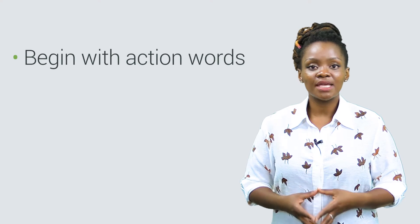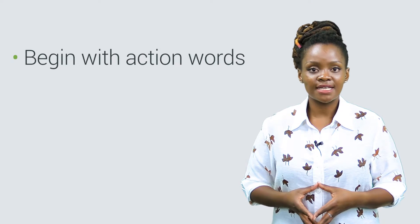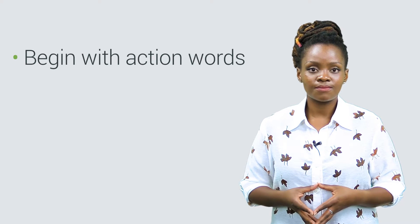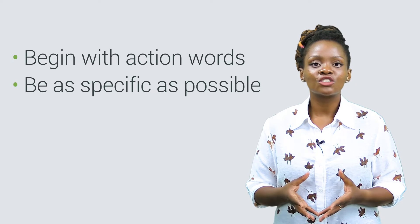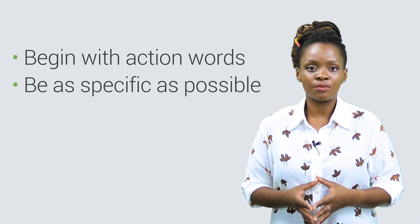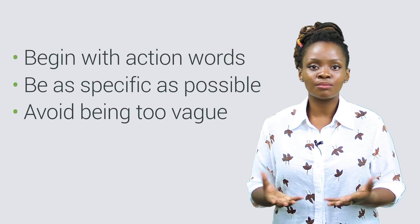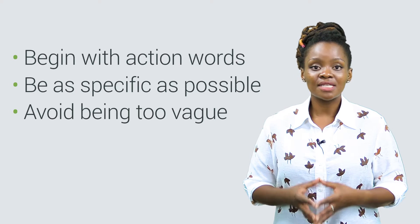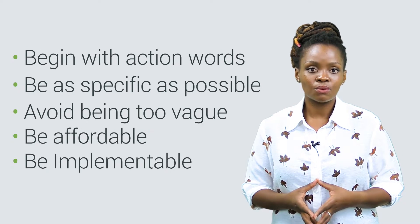When defining sub-projects, consider the following: firstly, begin with an action word such as draft, implement, facilitate, or commission research; secondly, be as specific as possible — for example, 'draft an alien invasive eradication plan for a particular community'; thirdly, avoid being too vague, for example saying 'improve infrastructure.' Sub-projects must be affordable and implementable with current staff and timeframes.